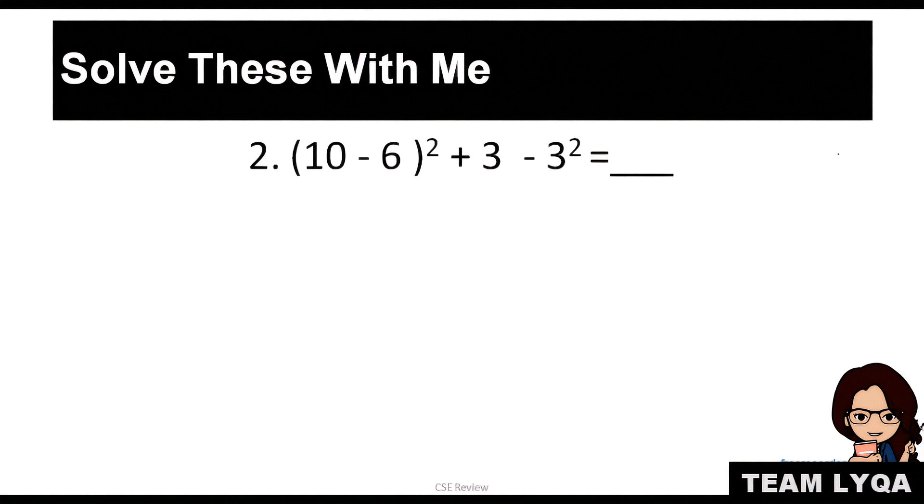Let's try this other one. Sabi it, 10 minus 6, plus yung quantity na yun, squared, plus 3, minus 3 squared. So, again, PEMDAS rules apply. You start with the parentheses. Meron bang parentheses? Yes. So, ito yun. So, 10 minus 6 is 4, squared, plus 3, minus 3, squared.